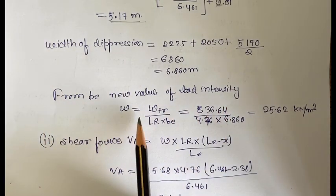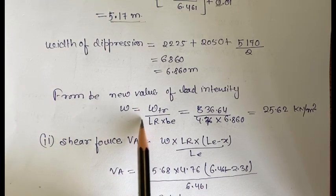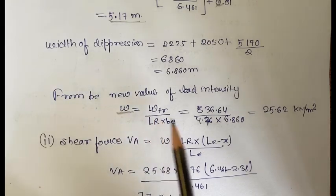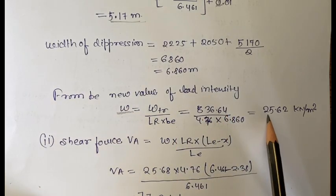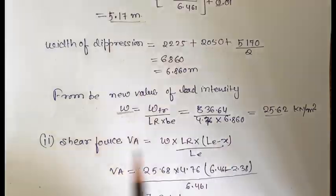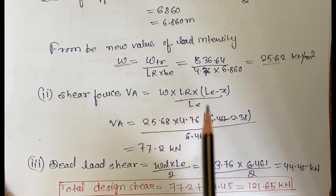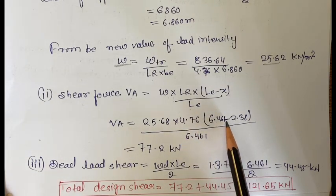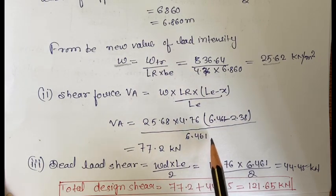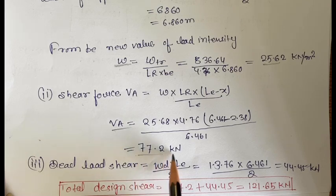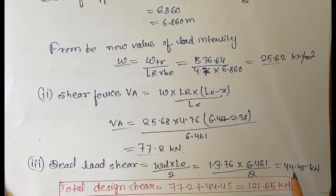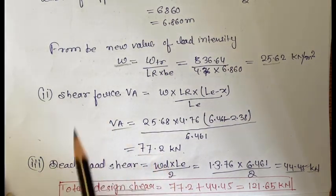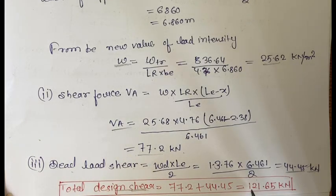With the new BE value, load intensity W equals track load divided by LR into BE equals 25.62 kN/m². Shear force VA equals W into LR into (LE minus X) divided by LE equals 25.68 into 4.76 into (6.461 minus 2.38) divided by 6.461, giving VA equals 77.2 kN. Dead load shear equals W_d into LE divided by 2 equals 44.45 kN. Total design shear force equals 77.2 plus 44.45 equals 121.65 kN.